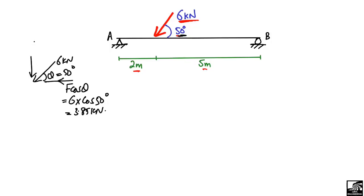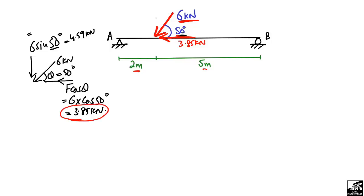The vertical component is equal to 6·sin50°. When you calculate this, it comes out to be 4.59 kN. So the horizontal load acting on the beam is 3.85 kN and the vertical component of the inclined load is 4.59 kN.